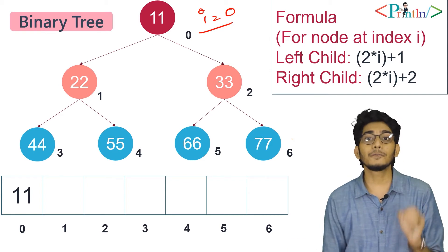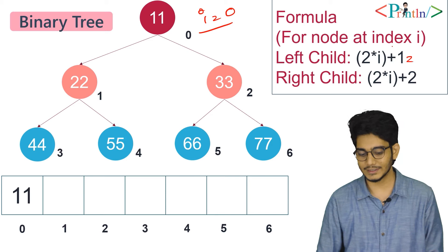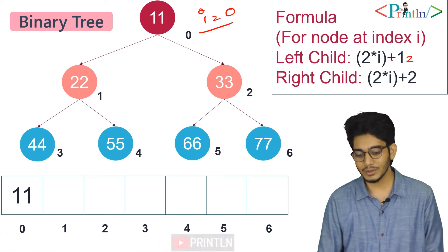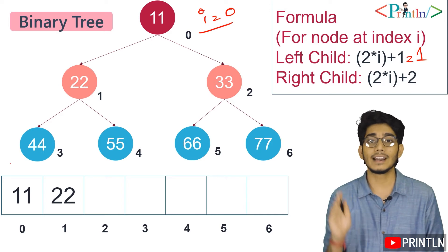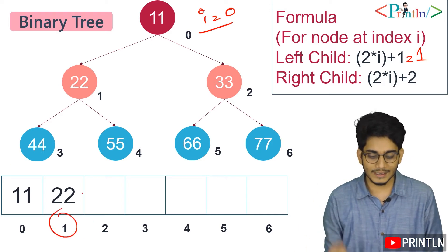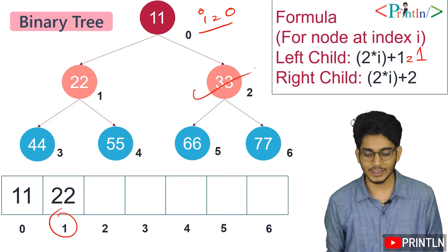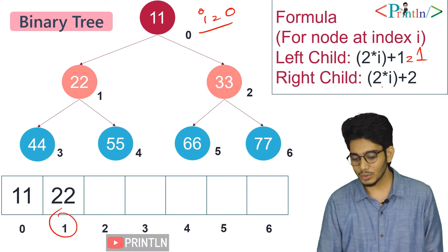plus 1 equals 1, so we will insert 22 at position 1. Now let's say we'll insert 33. Where will we insert it? We'll insert that at 2*i (where i=0) plus 2, which equals 2. So we have inserted 33 at index 2.